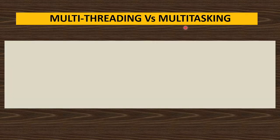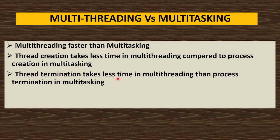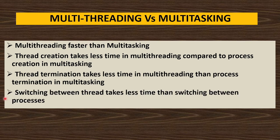Multi-threading is faster than multitasking. Thread creation takes less time compared to process creation, because a process is bigger in size and threads are smaller. Thread termination also takes less time than process termination. Switching between threads takes less time than switching between processes.